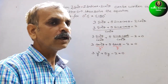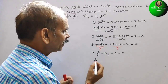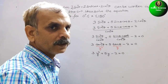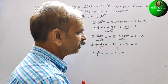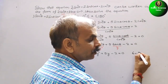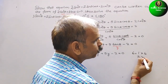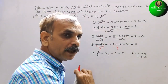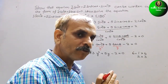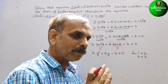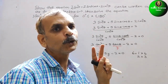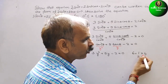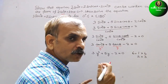The equation becomes 3y² + 5y - 2 = 0. Go for middle term splitting. We see 3 × 2 = 6, and the factors of 6 are 1×6 or 2×3. Since we have a negative term, we need one negative factor. Taking -1 and +6 gives us a difference of 5, which works.